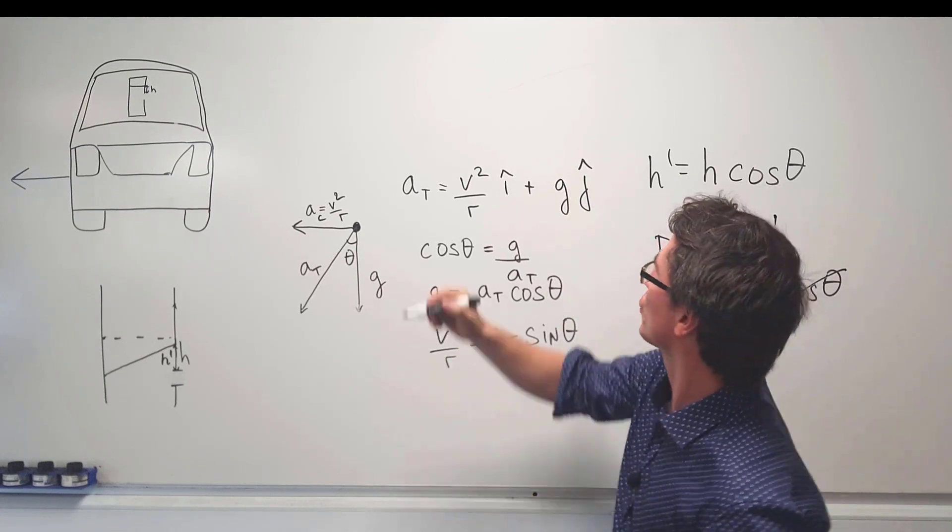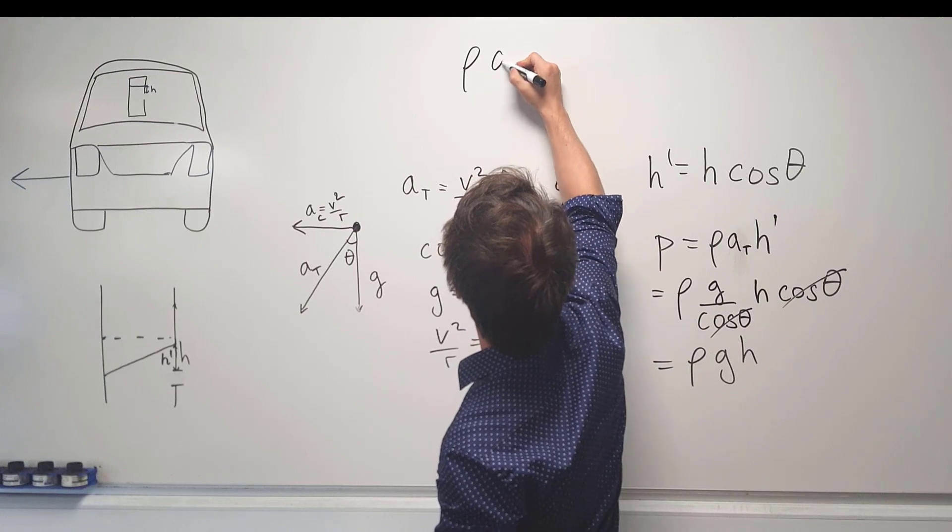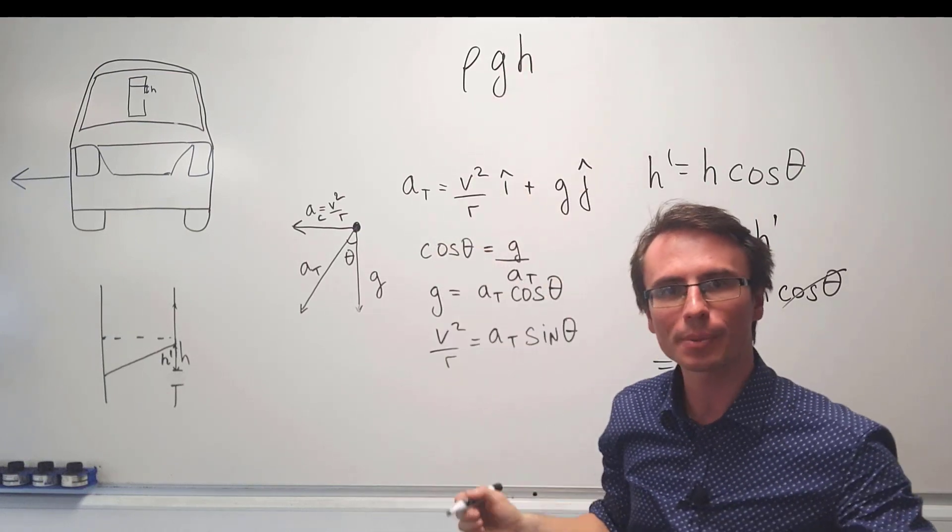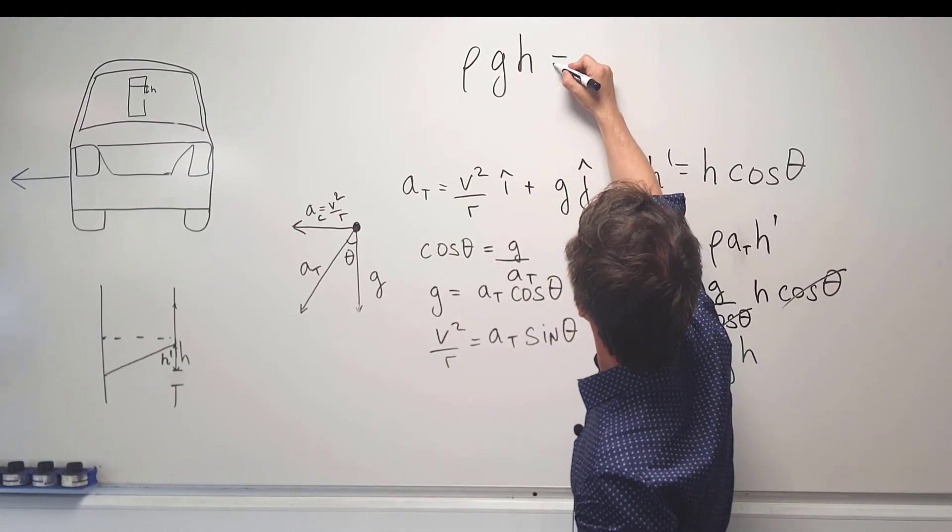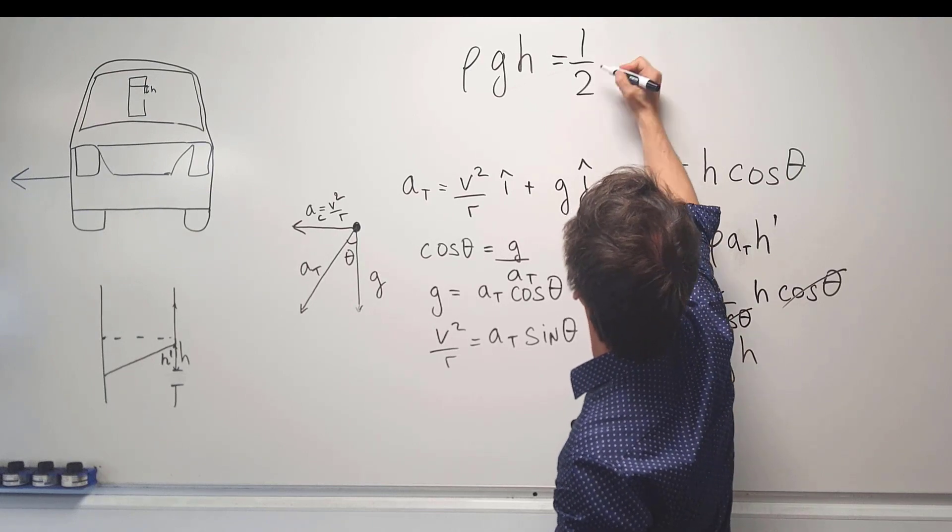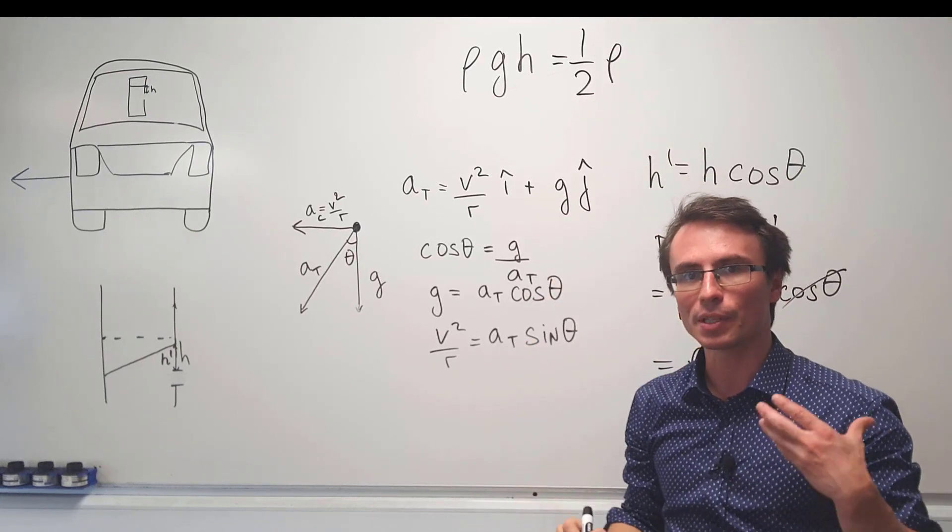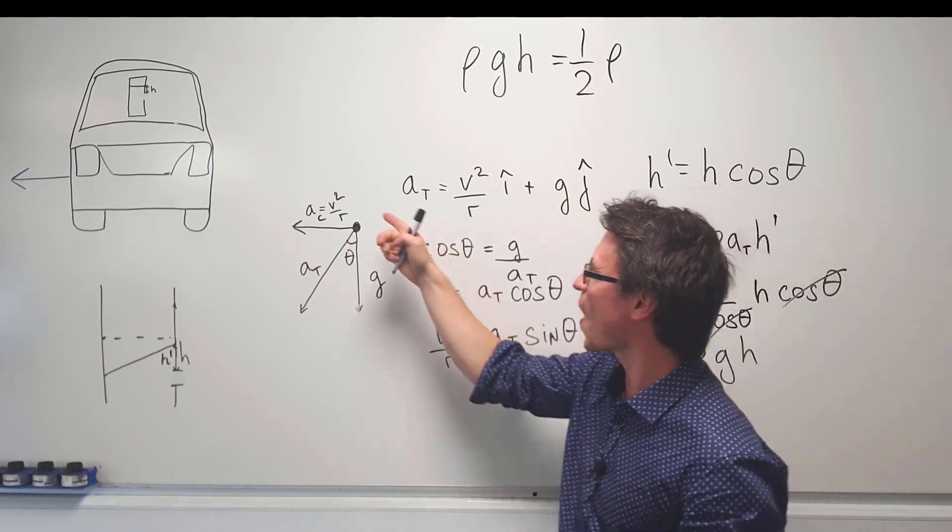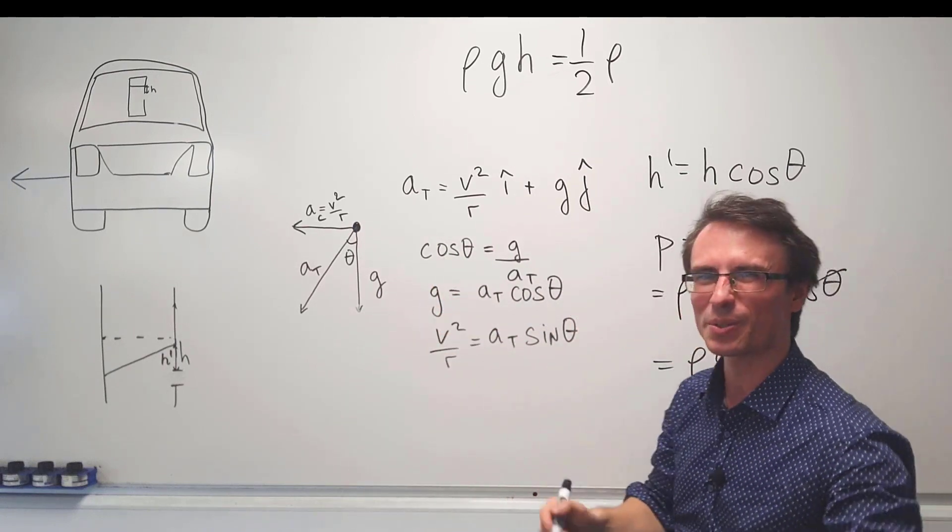The potential energy is just given by rho G H. It's very similar to M G H. We can set that equal to a half times the density times the speed squared. Now because the car is turning at a speed V, I'm going to use a different symbol.